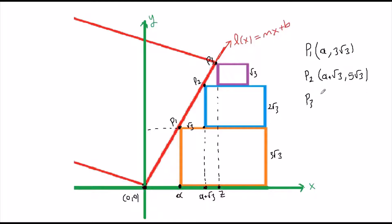Point two is (alpha + √3, 5√3). Point three has x-coordinate zeta and y-coordinate equal to the height of the orange plus the blue plus the purple square: 3√3 + 2√3 + √3 = 6√3. So point three is (zeta, 6√3). Our plan is to find the numerical values of points one, two, and three, and apply the distance formula from the origin through P3.